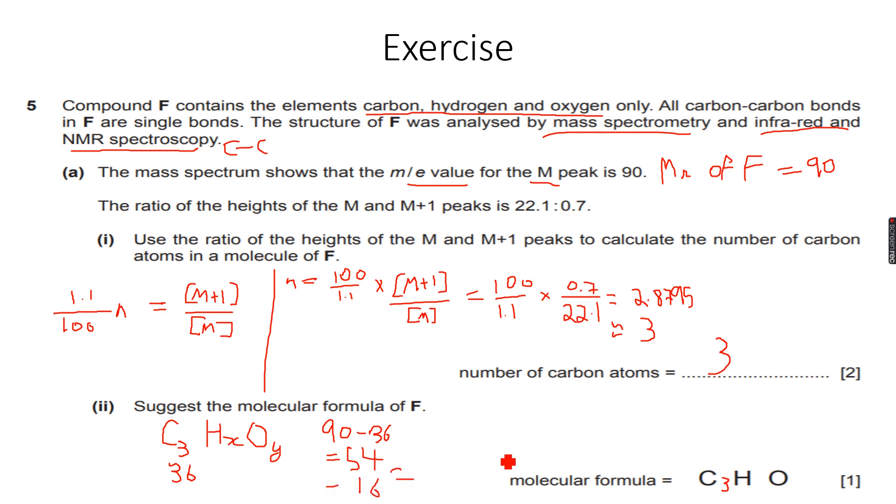If there is only one oxygen atom, there will be 38 hydrogen atoms in this molecule, which is not possible because I only have three carbon atoms. Three carbons and one oxygen cannot support 38 hydrogens.